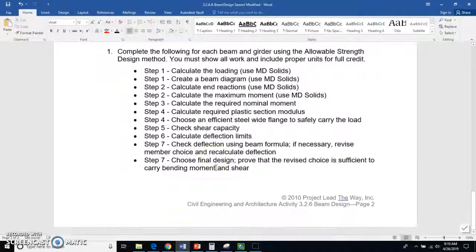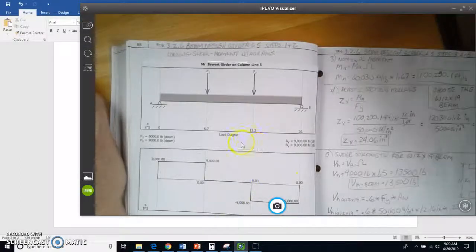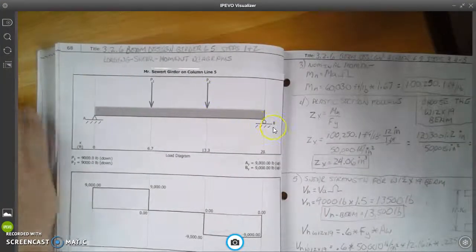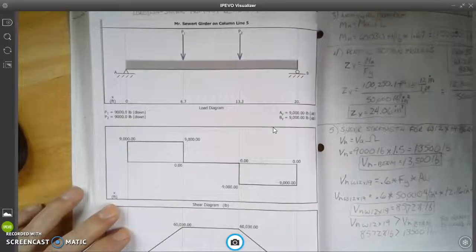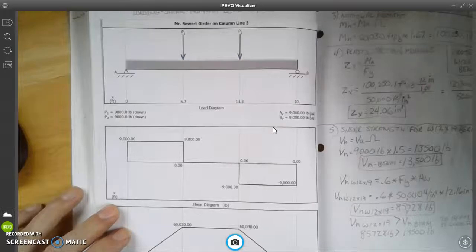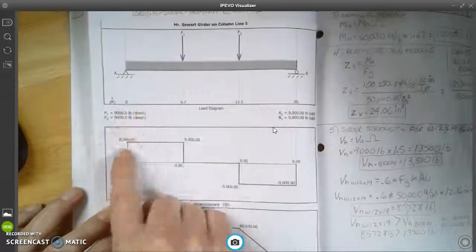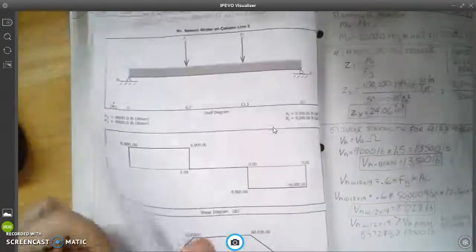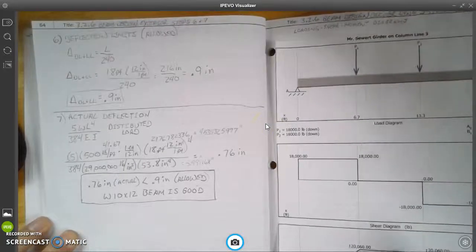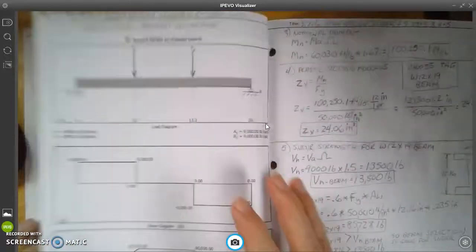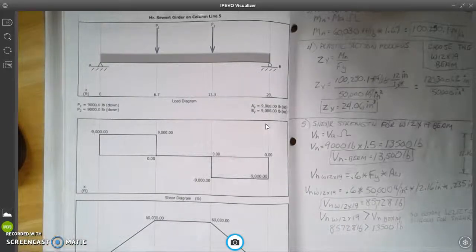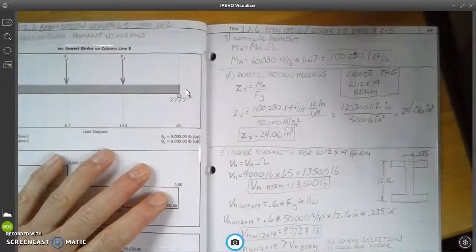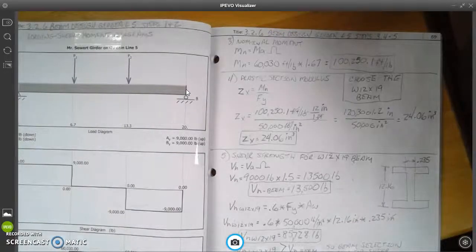Let's take a look with the software here at my design. Here is the MD Solids for this girder on column line 5. What you'll notice is that the force down is 9,000 pounds. That is half of what the force down is for the internal girder. Same thing for the beam: when you have the external, it's half of the internal because of the tributary area.